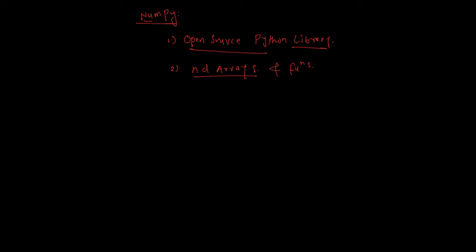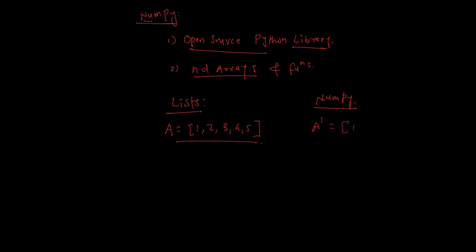NumPy is basically used for numerical operations. Now, the question is: if we already have lists in Python, why go for NumPy? Let's say we have a list A which stores numbers like 1, 2, 3, 4, 5. Then we have a NumPy array A' which is equal to 1, 2, 3, 4, 5. This array looks exactly like this list, so why should we go for this array?